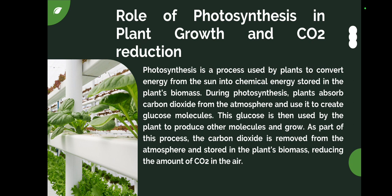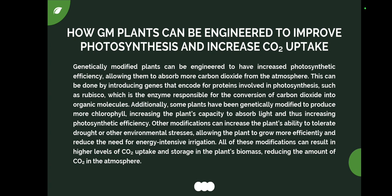Photosynthesis is a process used by plants to convert energy from the sun into chemical energy stored in the plant biomass. During photosynthesis, plants absorb carbon dioxide from the atmosphere and use it to create glucose molecules. The glucose molecule is then used by the plant to produce other molecules and grow. As part of this process, the carbon dioxide is removed from the atmosphere and stored in the plant biomass, reducing the amount of CO2 in the air.